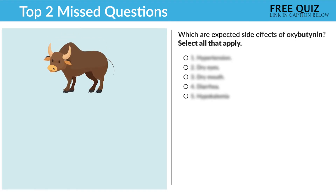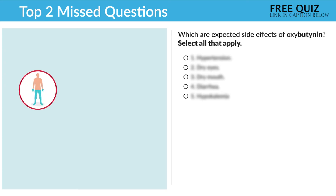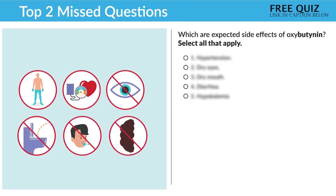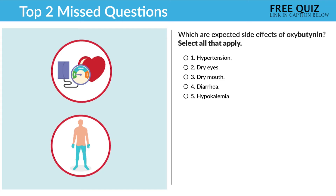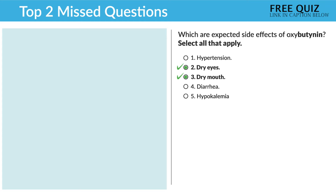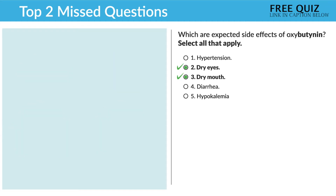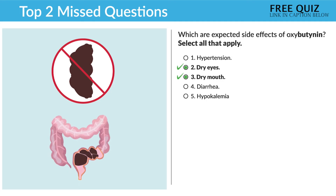Remember: the 'B' in oxybutynin is for overactive bladder, and it dries the body. So we have low blood pressure, and you can't see, pee, spit, or poop — we get constipation. Option one, hypertension, is incorrect — we get low blood pressure when the body is dry. Options two and three are correct: dry eyes and dry mouth, since you can't see and can't spit. Option four, diarrhea, is incorrect — you can't poop; we get constipation when the body is dry.